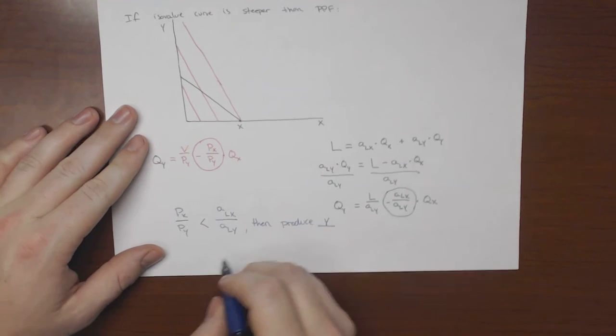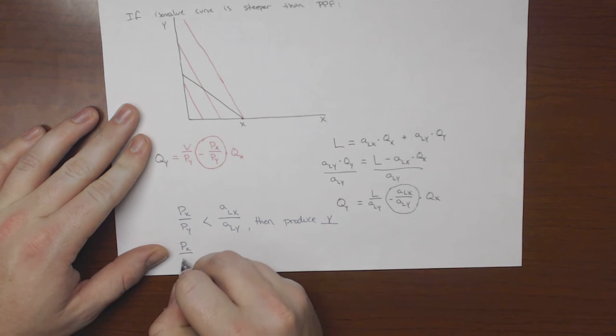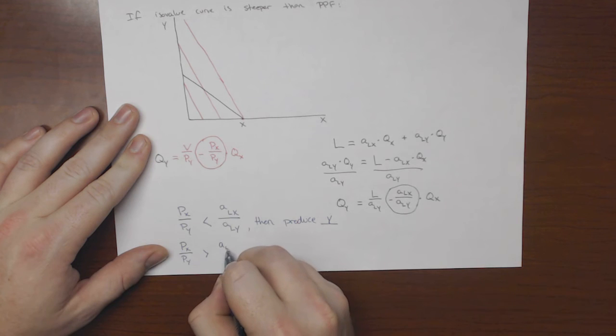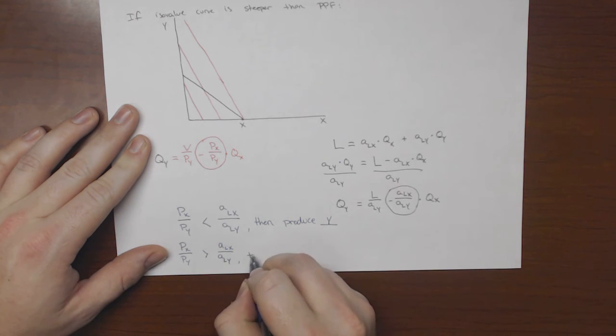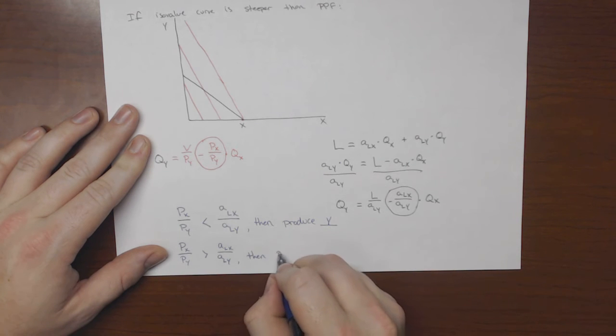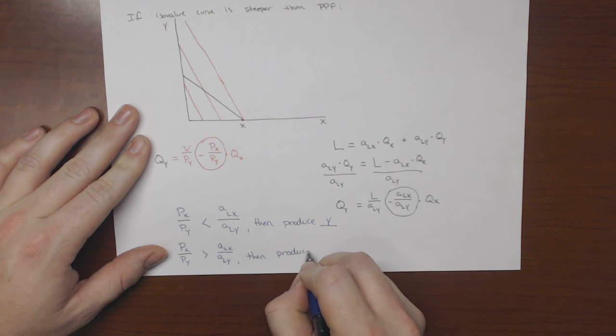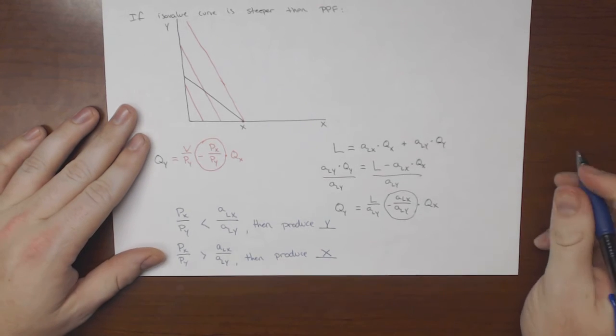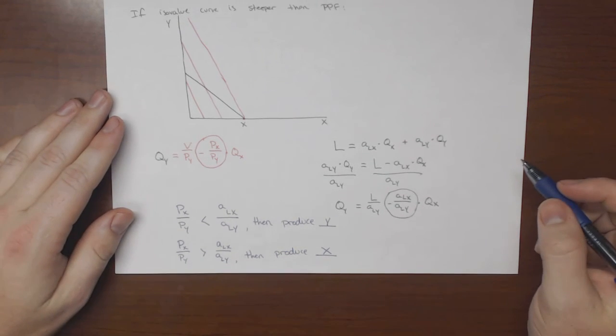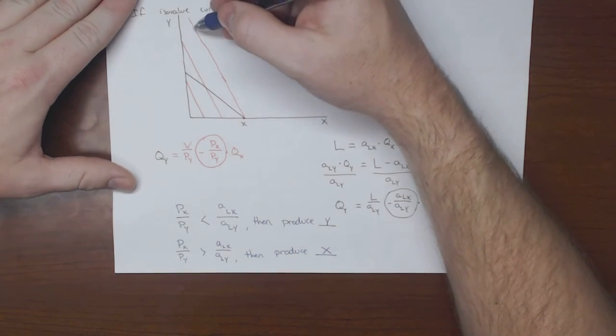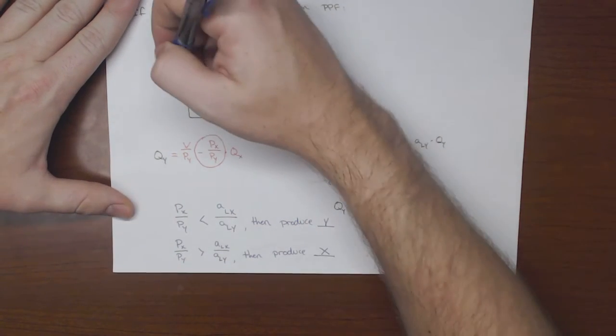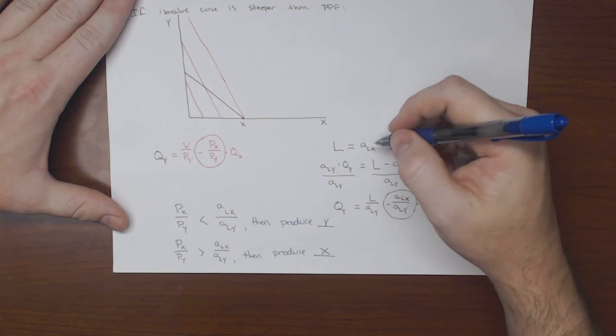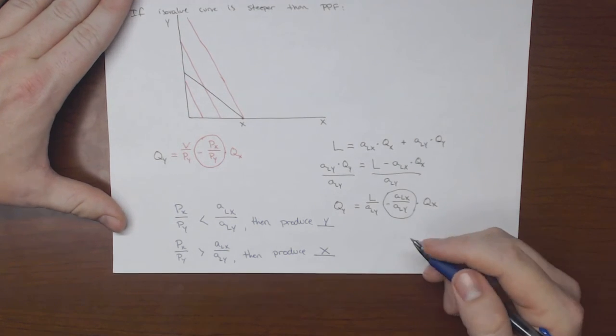And conversely, if px over py is greater than alx over aly, then produce x. Which is saying, if this line, this red line here is steeper than the black line, the ppf curve, produce x.